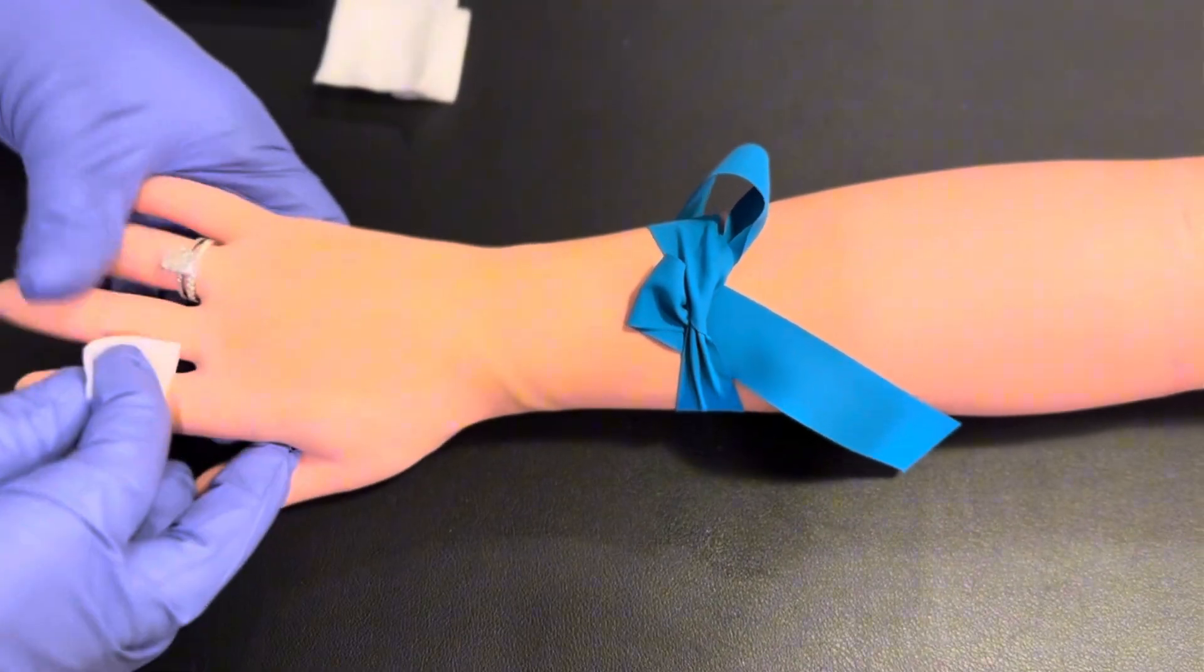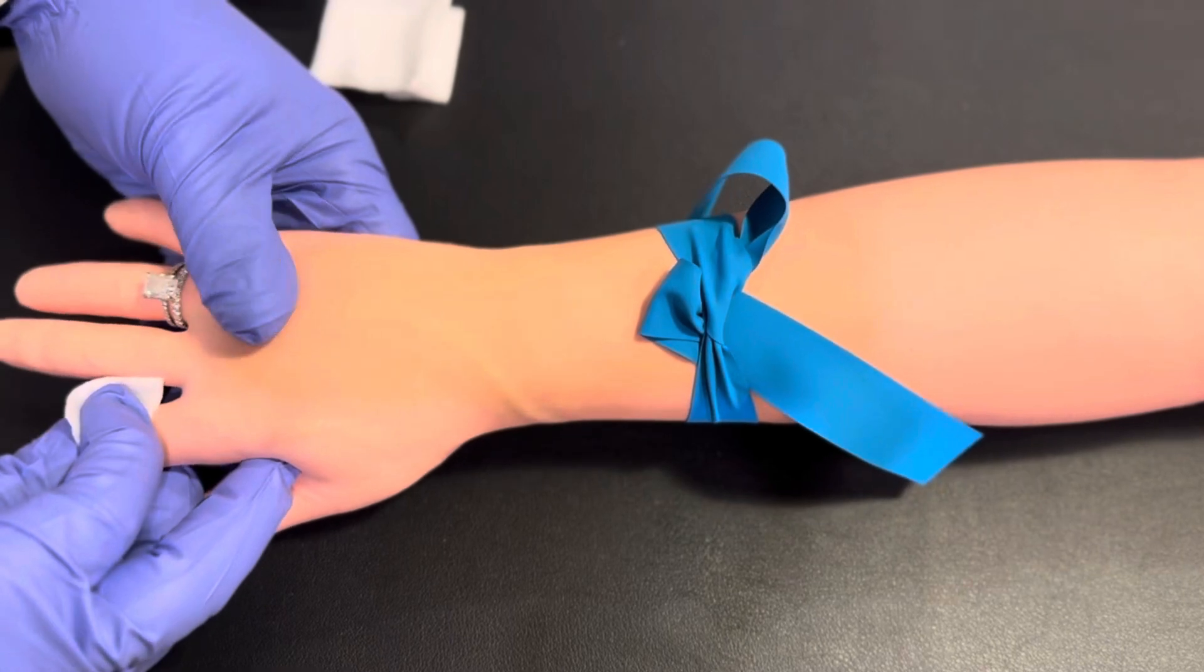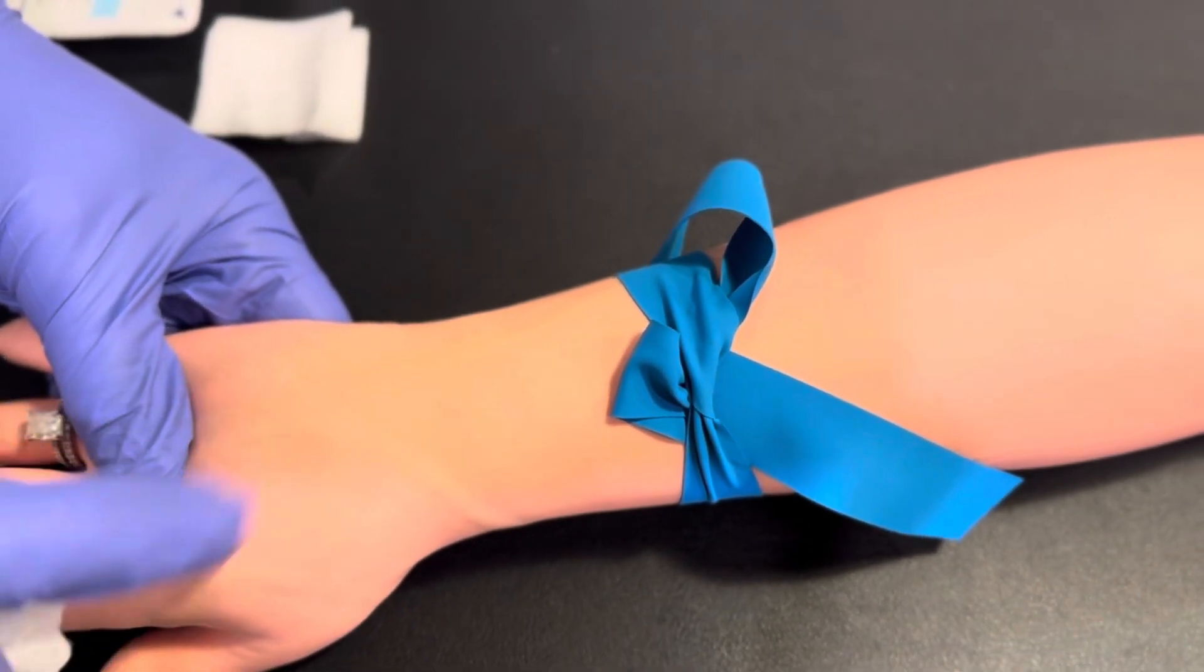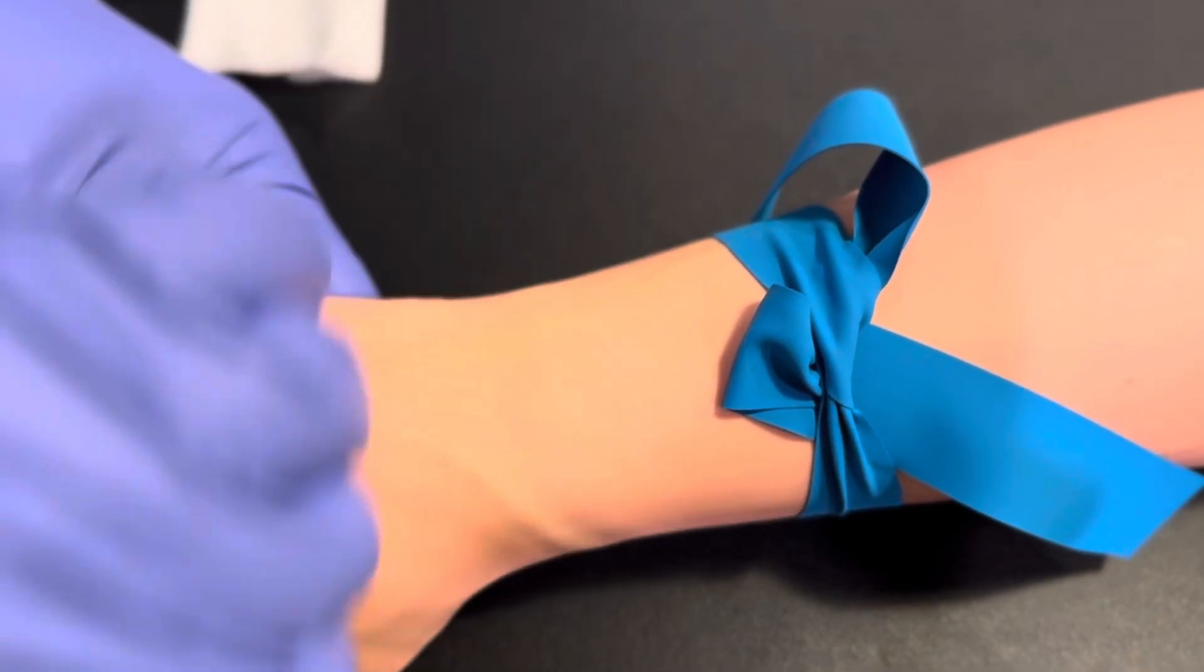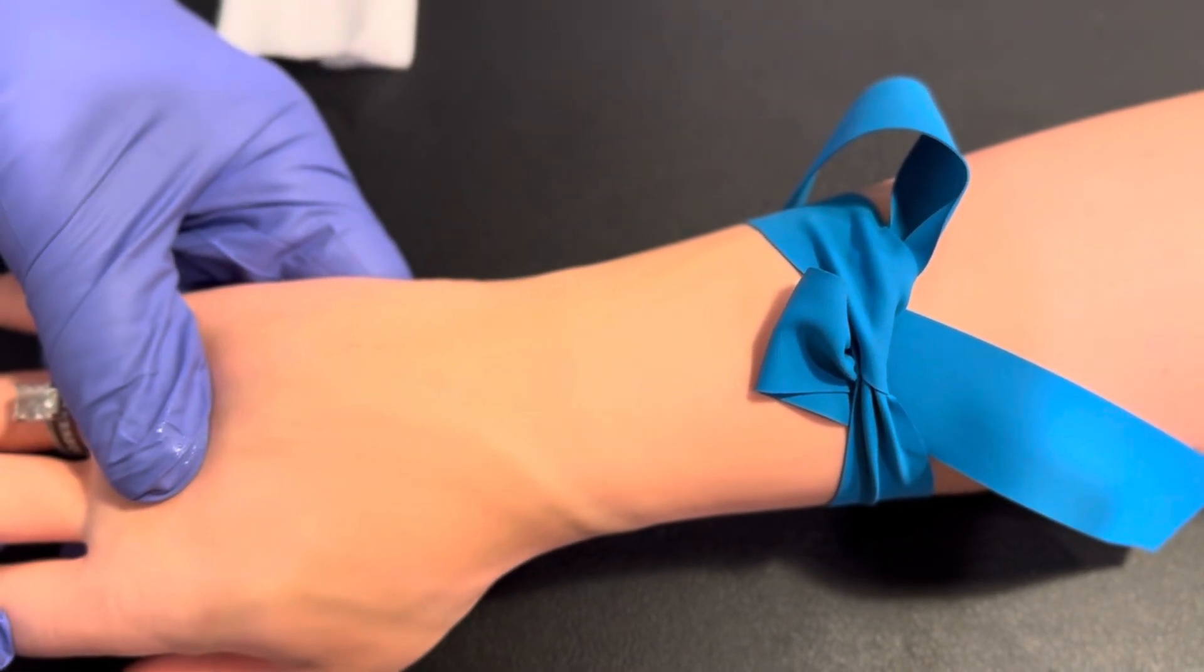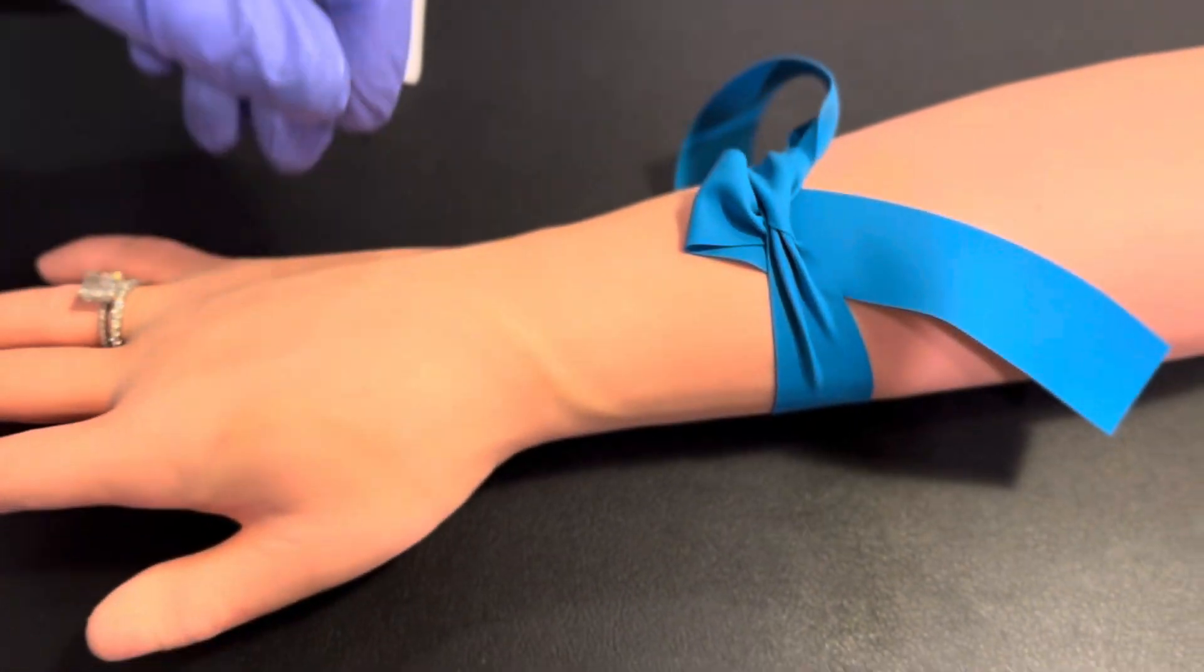Once the site has dried, please anchor the vein using the thumb or index finger, one to two inches below the site of incision. Allow the veins to dilate and release the tourniquet.